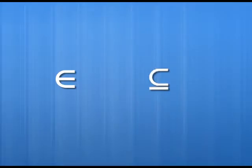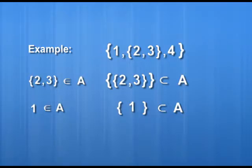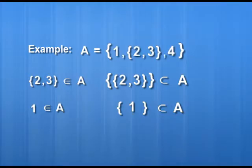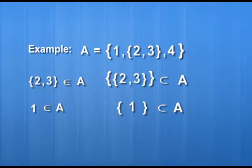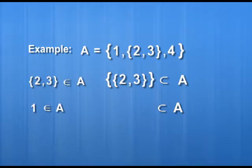We have used two symbols: 'belongs to' (∈) and 'contained in' (⊆). Let me clarify these. Consider set A containing three elements: the number 1; the set {2, 3} as an element; and the number 4. The set {2, 3} belongs to A using the ∈ symbol. If we consider {2, 3} as a set within braces, it becomes a singleton set and is therefore a subset of A. Similarly, 1 belongs to A, and {1} is a subset of A.